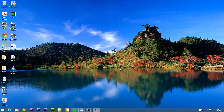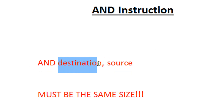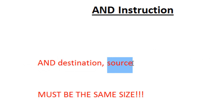The AND instruction performs a boolean bitwise AND operation between each pair of matching bits in two operands and places the result in a destination operand. The syntax starts with AND, then a space, then the destination operand, a comma, a space, and the source operand.